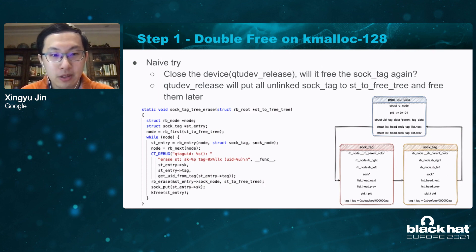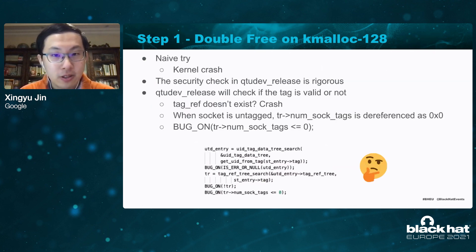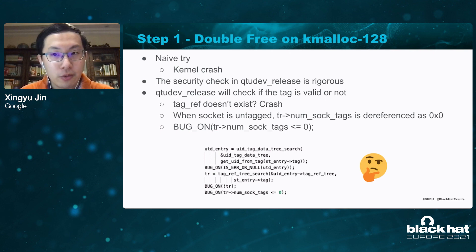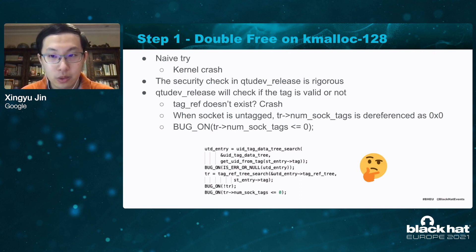The kernel module also has to unlink the soc_tag structures and free them during cleanup. If we have two identical soc_tag structures or a soc_tag structure with an invalid tag, the kernel will crash because there are several security checks in the cleanup code. If we corrupt a soc_tag structure with an invalid tag, the kernel crashes because the corresponding tag_ref structure does not exist. If we create two identical soc_tag structures, the reference count will become invalid, causing a kernel crash.